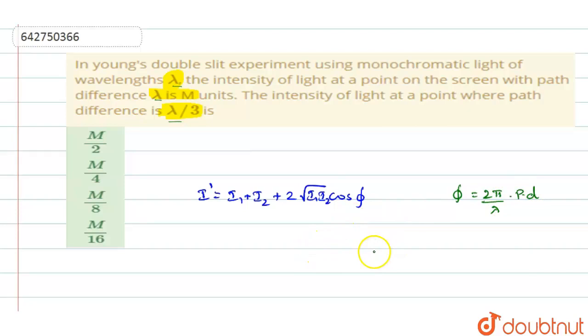So path difference is given now. Path difference, they are telling it as lambda. So it is 2π by lambda into lambda. And so the phase difference φ will be 2π radians.